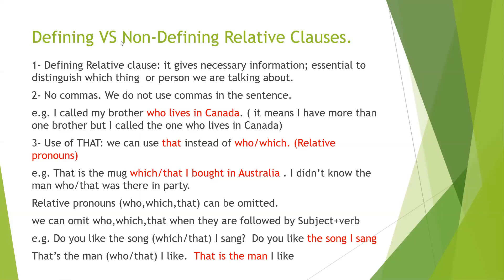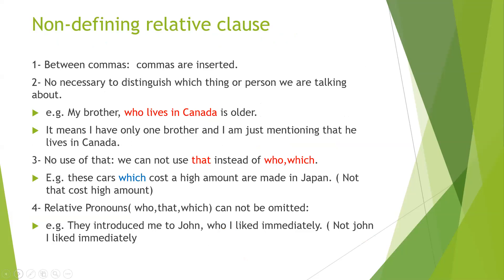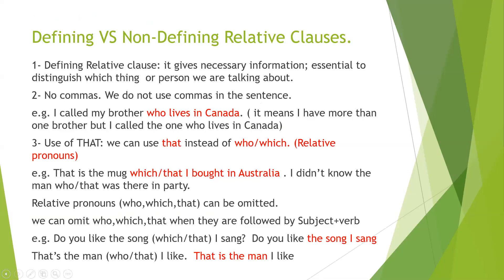Just to summarize quickly as time is running out: in a defining relative clause, you cannot use commas. You give information about one person or thing in that way. You can use 'that' in place of 'who' or 'which.' And if 'who,' 'which,' or 'that' are followed by subject and verb, you can omit those relative pronouns. So if this type of clause is in front of you, it is your defining relative clause.